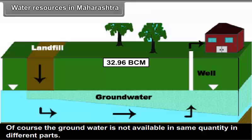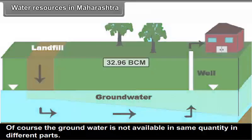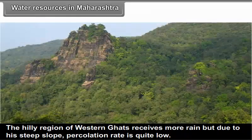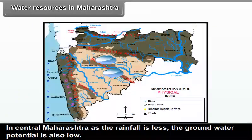The ground water is not available in the same quantity in different parts. The hilly region of Western Ghats receives more rain but due to the steep slope, percolation rate is quite low. In central Maharashtra, as the rainfall is less, the ground water potential is also low. Comparatively, in the low-lying areas within the river basins, ground water is more.